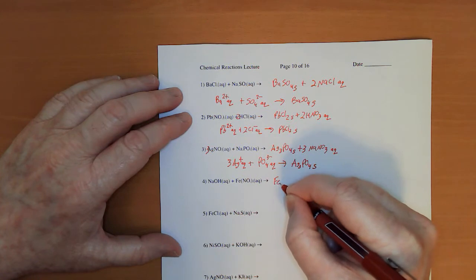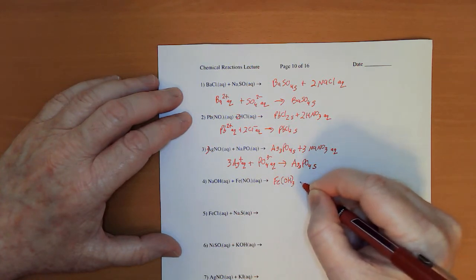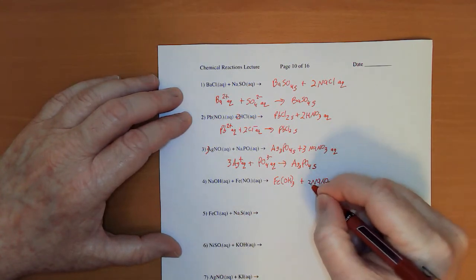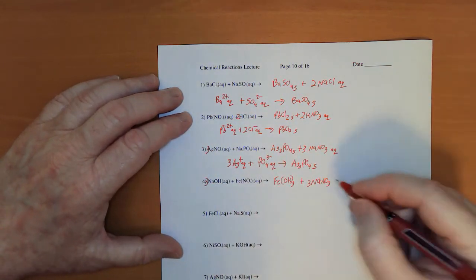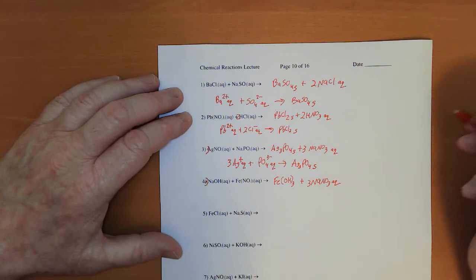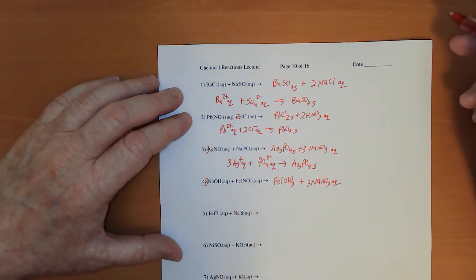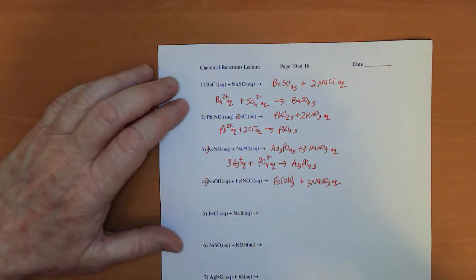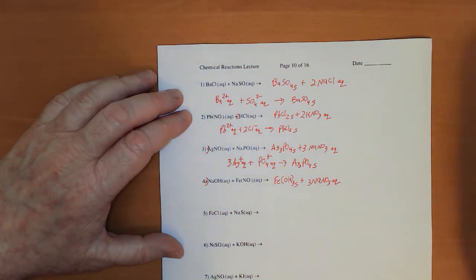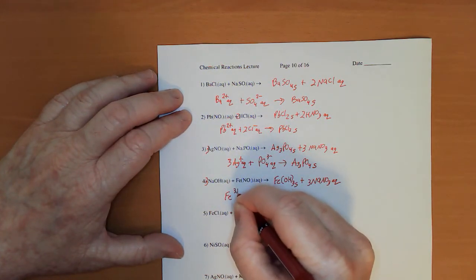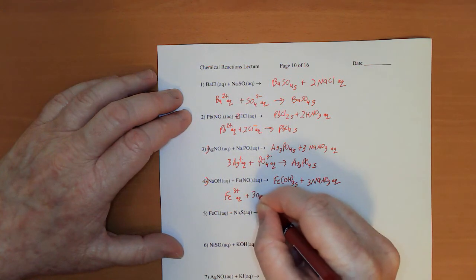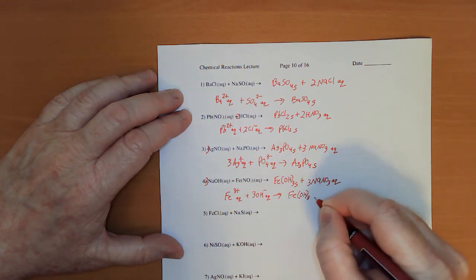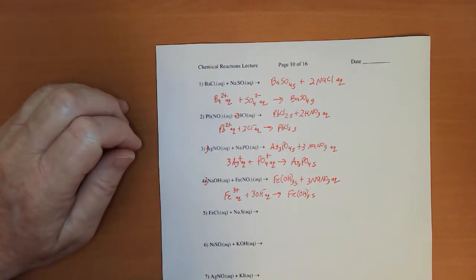Partner exchange, Fe(OH)3 plus NaNO3. Three of those, looks like I'm going to need a three up front there. This is going to be aqueous. Hydroxides are pretty soluble with group one and group two mostly, but they're not so soluble with transition metals and I'm dealing with a transition metal here, so that's going to be my solid. Fe3+ aqueous plus 3OH- aqueous to give me Fe(OH)3 solid.